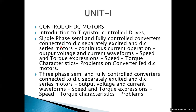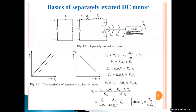Now the basics of the separately excited DC motor. You already studied this concept in machines. In a separately excited DC motor, the field winding is excited by a separate supply system — the field winding is separately excited. In contrast, series motors are self-excited and only one excitation is required. That is why this is called a separately excited DC motor.